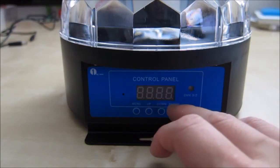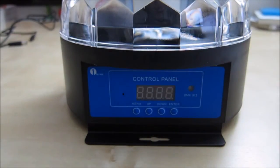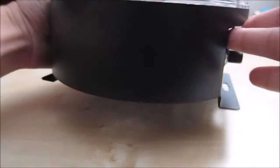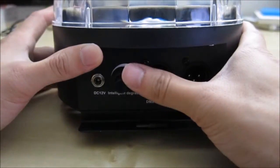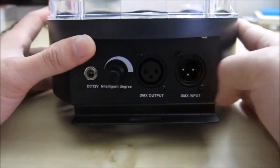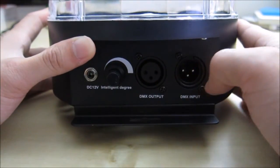And then enter, which basically saves the settings so that next time you turn it on, you have the setting again. In the back of the device, as you can see here, you have the DC input, you have this intelligent knob here which controls sound sensitivity, and then you have the DMX input and output here.